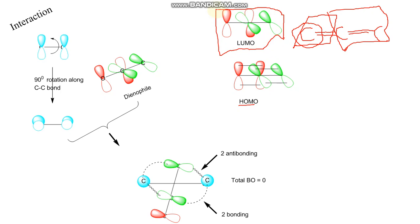We need only the LUMO configuration of the dienophile. You have the dienophile LUMO and the diene HOMO. If you rotate 90 degrees, the system forms like this. One important thing to remember: 2+2 cycloadditions with specialized alkenes happen in a perpendicular direction, which is why the reaction proceeds in the forward direction successfully.